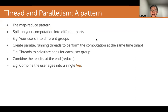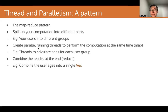We also introduced you to a pattern in parallelism called the MapReduce pattern. There are three steps to this pattern. The first step is splitting up the computation into different parts — for example, when calculating your users' ages, you might want to split your users into different groups. The second stage is creating parallel running threads to perform the computation at the same time; this is called the map stage. And then the last step, you combine the results — this is called the reduce step. An example might be combining the user ages calculated earlier into a single vec.